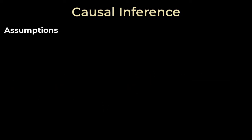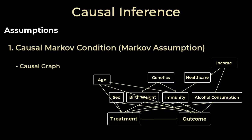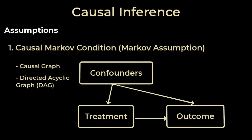The first assumption is the causal Markov condition. When doing causal analysis we need to talk about causal graphs — graphs with directed edges that show causation. For our medical example, we simplify the causal graph to be a directed acyclic graph where confounding variables have a direct causal effect on the treatment and sickness outcome, and the treatment itself has an effect on the outcome, but nothing more than this.